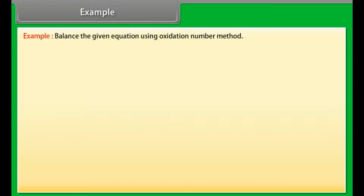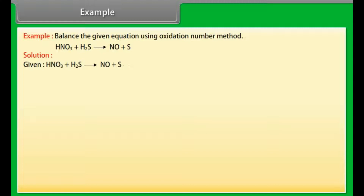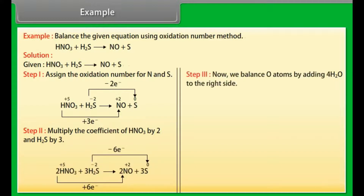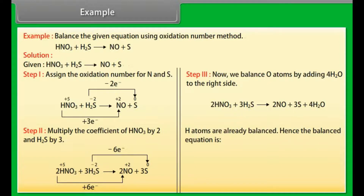Example: balance the equation using the oxidation number method. The given equation is HNO₃ + H₂S → NO + S. Step 1 — assign oxidation numbers to N and S. Step 2 — multiply the coefficient of HNO₃ by 2 and H₂S by 3. Step 3 — balance O atoms by adding 4H₂O to the right side; H atoms are already balanced. Hence, the balanced equation is: 2HNO₃ + 3H₂S → 2NO + 3S + 4H₂O.